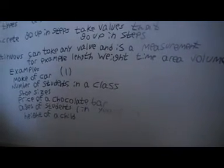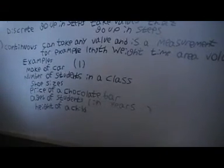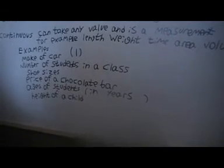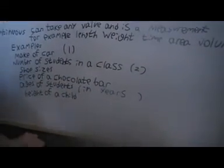Next one is the number of students in a class. Because the number of students in a class isn't actually a measurement and it goes up in values — you could have one, two, three, four, five and so on students in a class. You can't have something like three and a half — that wouldn't work. So this one is quantitative and discrete.